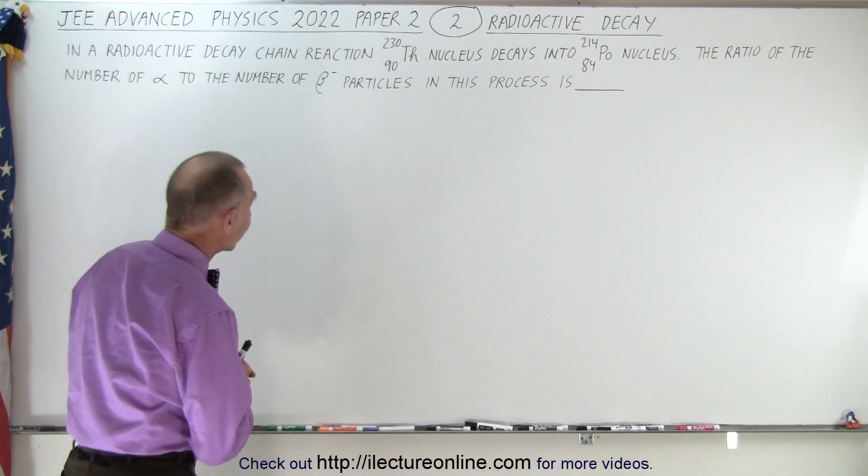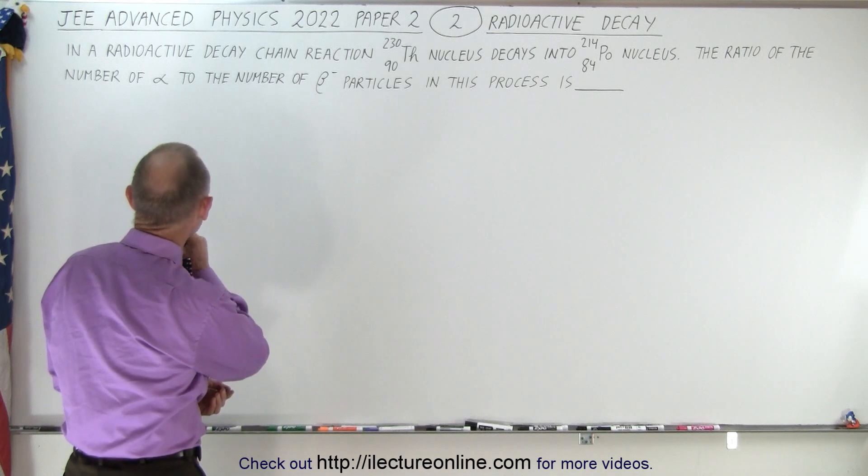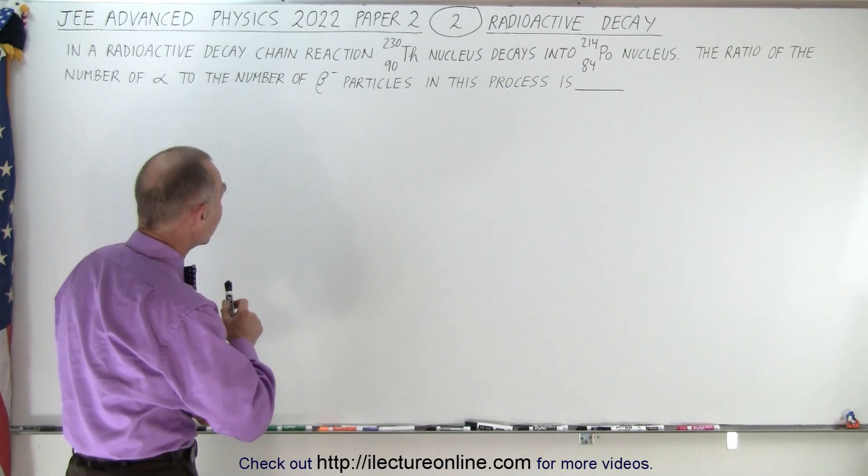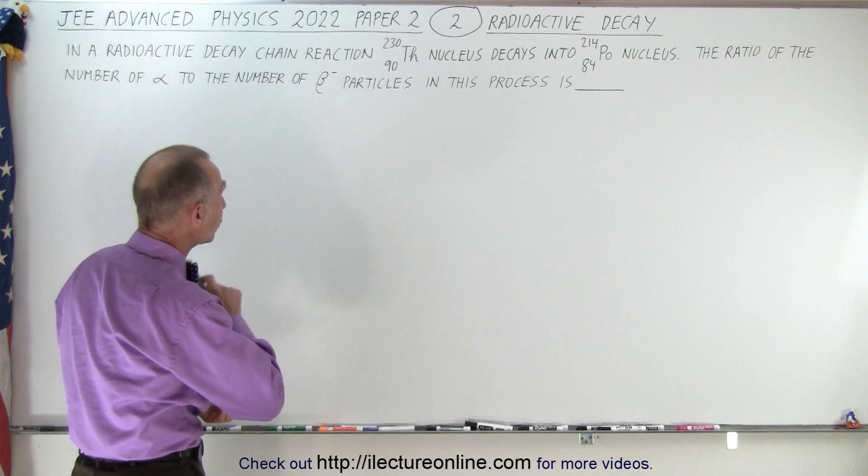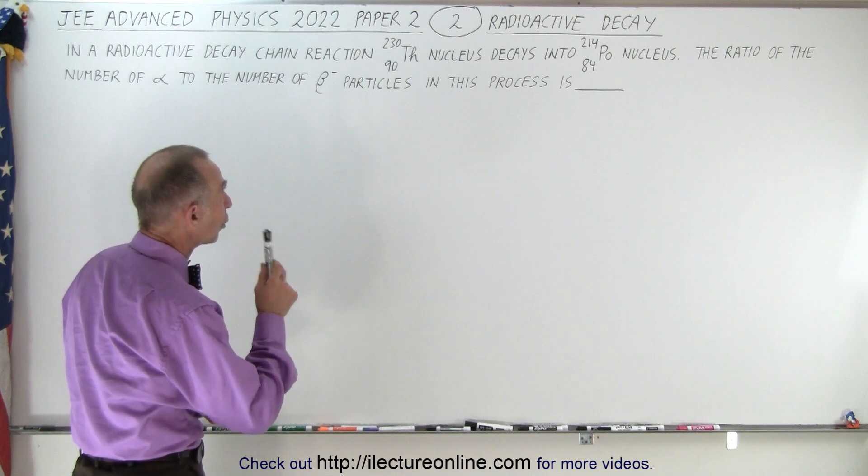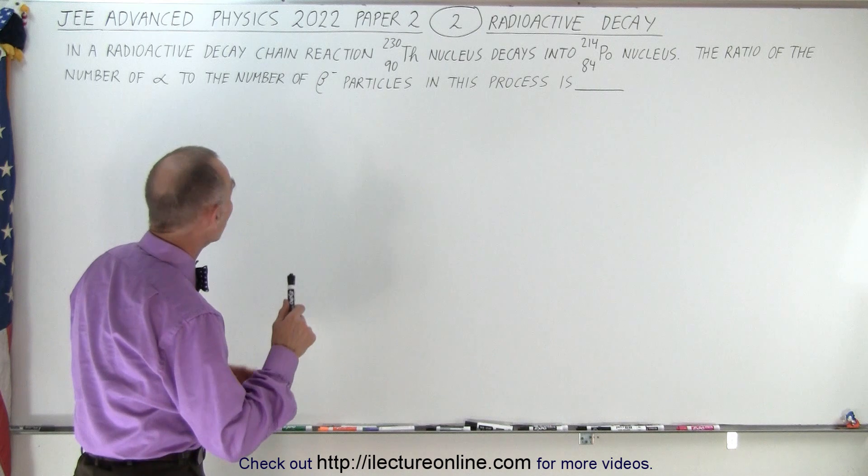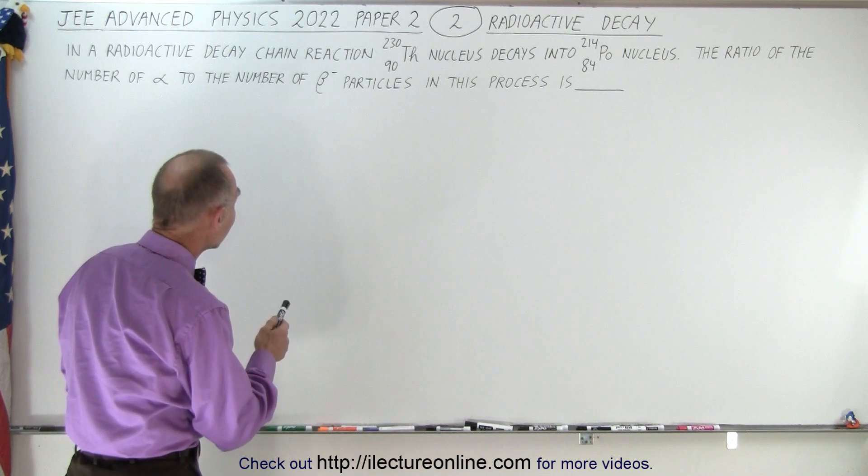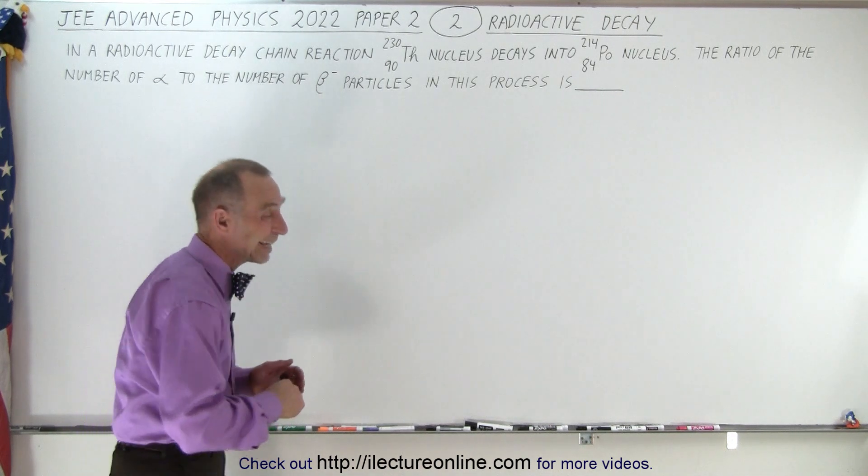This one deals with radioactive decay, so let's read the problem. In a radioactive decay chain reaction, thorium-230 nucleus decays into a polonium-214 nucleus. The ratio of the number of alpha to number of beta decay particles in this process is...